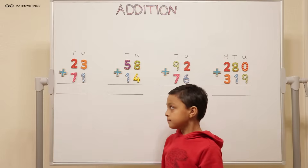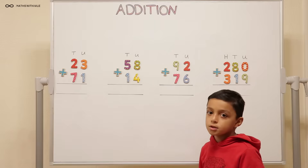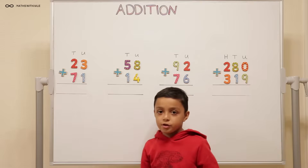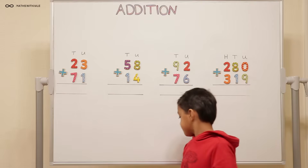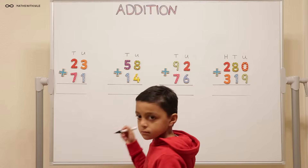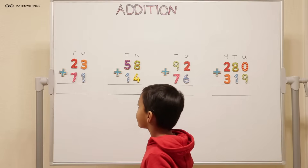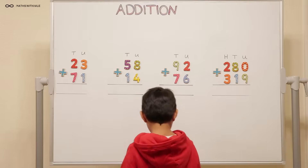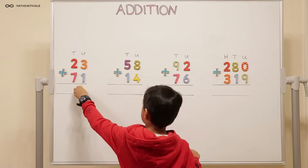So when we're doing addition column method, we have to add the columns. Where do we start? Always with units. So can you add the units column and tell us, use the magnetic numbers. Three plus one equals four. So you add the units — three plus one equals four.